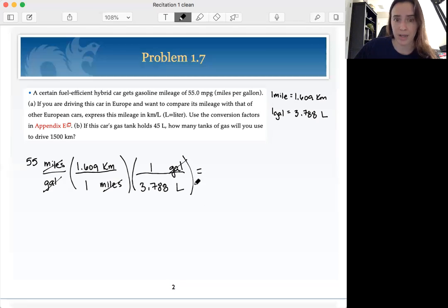So now I can go through multiplying across the top. So 55. So let's bust out our handy calculator. So we have 55 times 1.609 times 1 divided by 1 times 3.788, which leaves us with 23.36 kilometers per liter. But we have 123 significant figures.